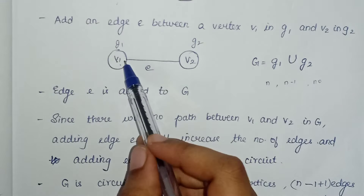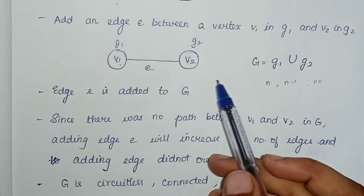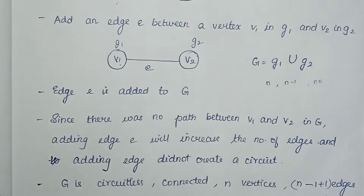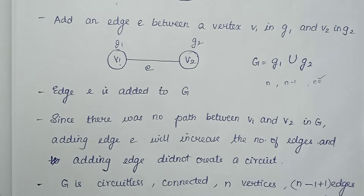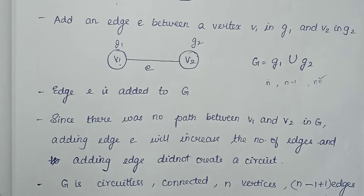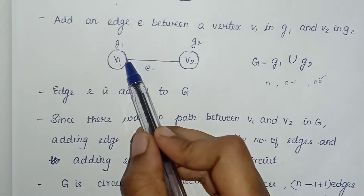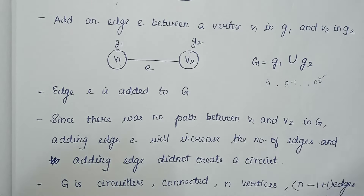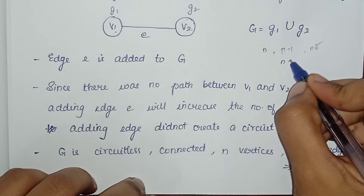If you want to add the edges, it is disconnected. This is the no-circuit condition. N vertices are already there — we already have the graph with n-1 edges. Now, you can add this edge: n-1 plus 1, giving n edges. That is the condition.